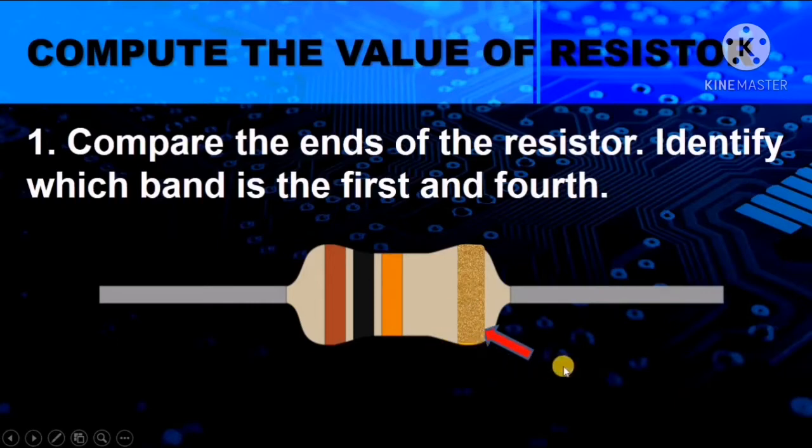The last and fourth band of a resistor has either a color of gold or silver as the tolerance. So that will be the last band. From there, it's easy to identify the first, second, and the multiplier.